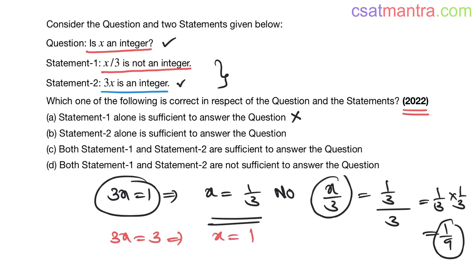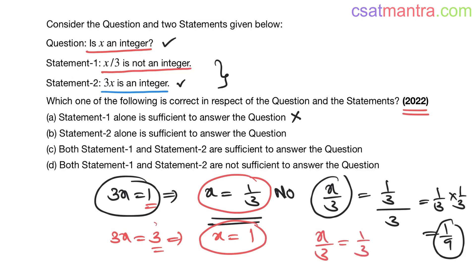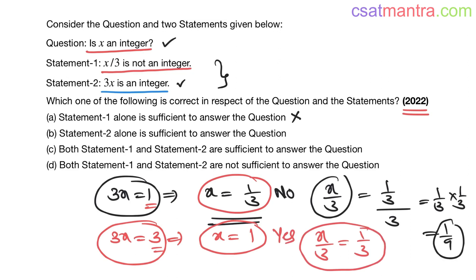Now try another value. For x to be an integer, take 3x=3, so x=1. Then x/3=1/3, which is not an integer — Statement 1 is satisfied, Statement 2 is also satisfied. In this case, is x an integer? Yes. We get two different answers for the same combined statements, so both Statement 1 and Statement 2 together are not sufficient to answer the question. The answer is D.